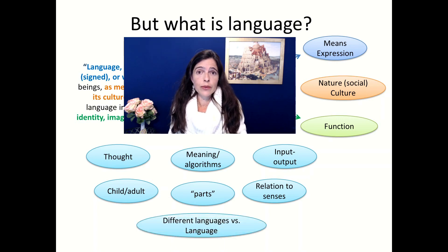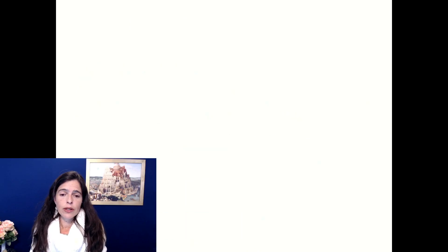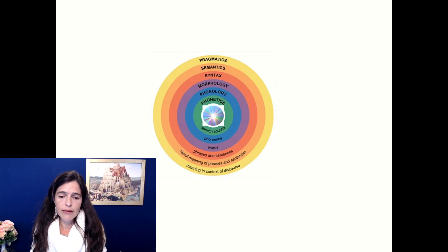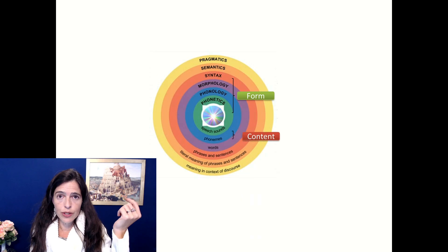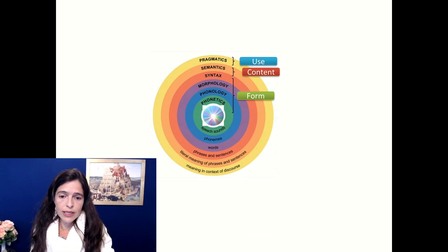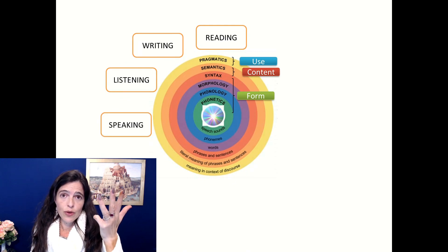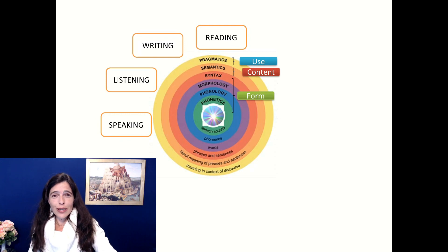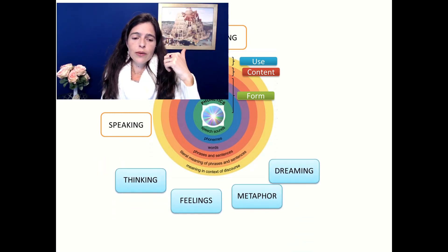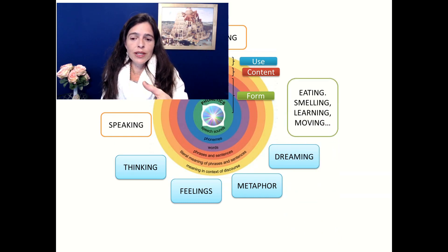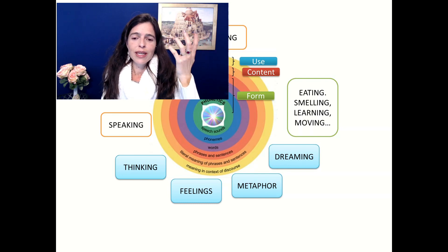There's a difference between different languages and language itself — why don't we all have the same kind of language? Nobody knows. This diagram shows all the layers of what one single language has: meaning and context, phrases, sentences, words, phonemes — all of that for reading, writing, listening, and speaking. Four different kinds of skills involving many micro-skills. We also use language when we think, feel, use metaphor, or dream. On top of that, the same organs are used for eating, smelling, and moving. It's so complex that I don't think random mutations would have made it possible.